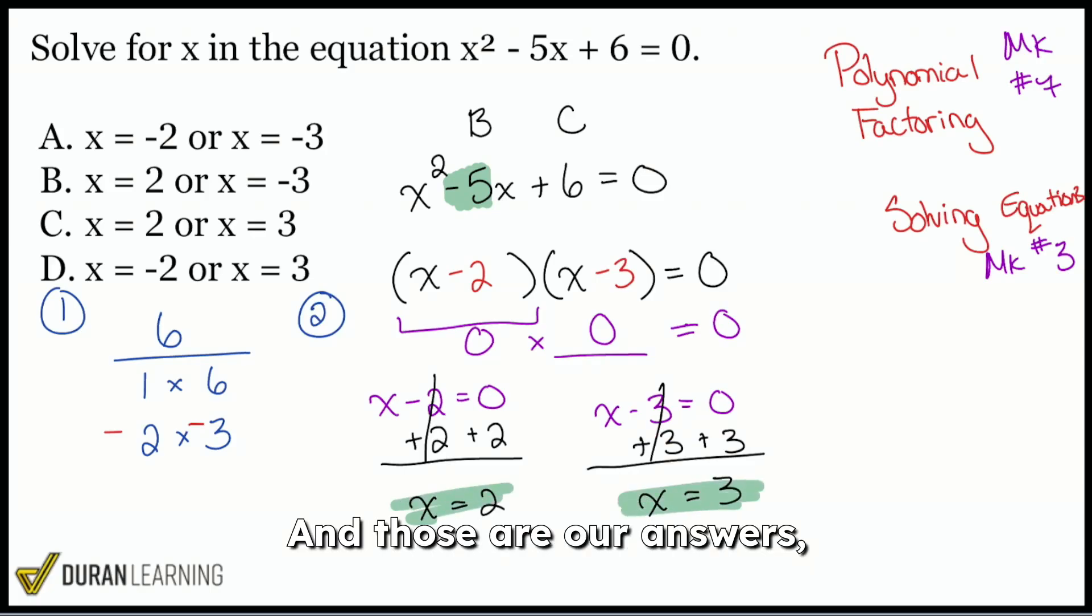And those are our answers, everybody. It's not going to be negative 2 and negative 3. It's going to be positive 2 and positive 3. Those are the correct answers. And that's why it's actually going to be C and not A.